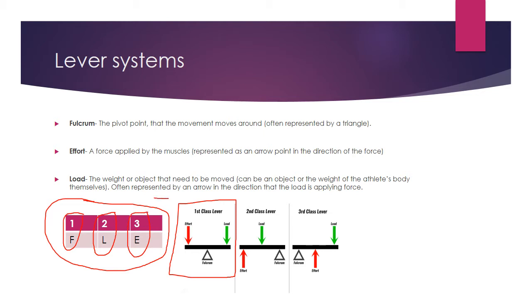So if we transfer that across to this diagram here, we can see that for our first class lever, our fulcrum is in the middle. For our second class lever, the load is in the middle. And for our third class lever, the effort is in the middle. Now it's all well and good understanding how that works as a sort of a seesaw diagram, but more importantly, we need to be able to apply that to the body.